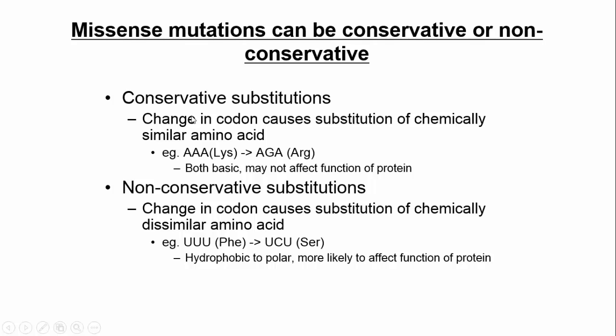If we have a conservative missense mutation, we're changing the amino acid, but the one it was and the one it changed to have similar properties — maybe they're both basic, so it might not affect the protein that much. If we have a non-conservative substitution, those are ones where we're changing from one that might be hydrophobic to one that's very hydrophilic, and that's where we could have a greater effect. Non-conservative is where the amino acids change from one property to a very different one.